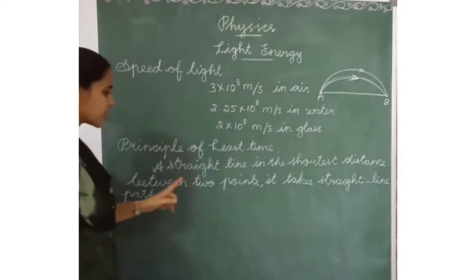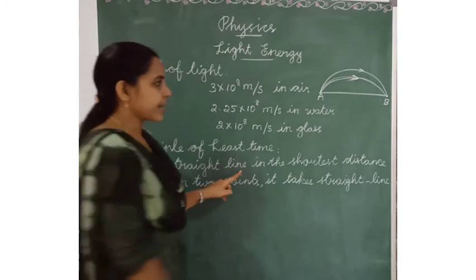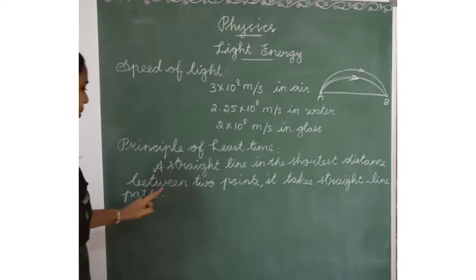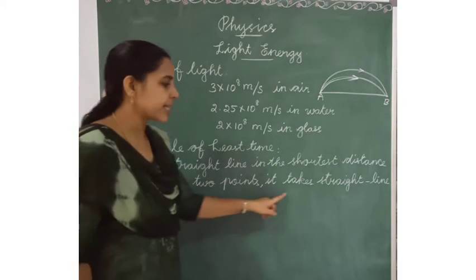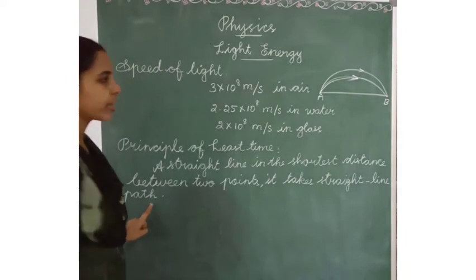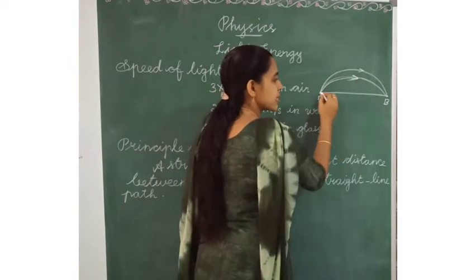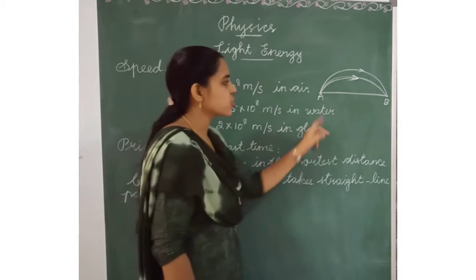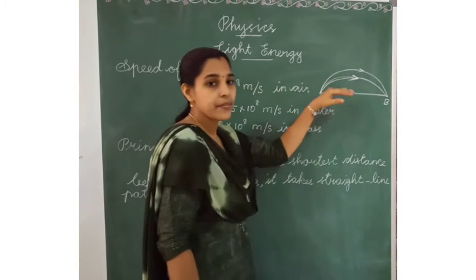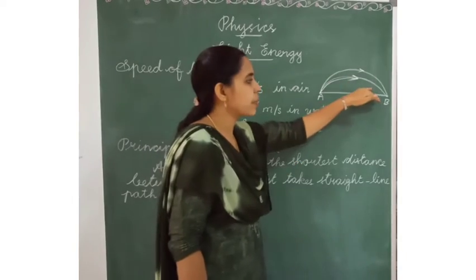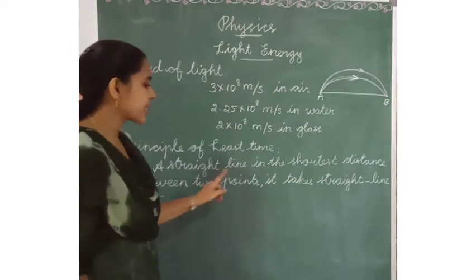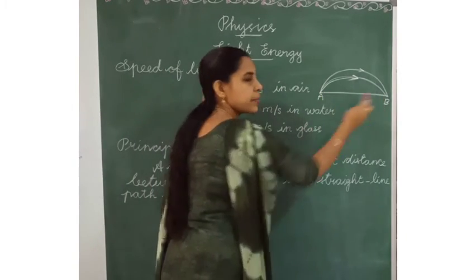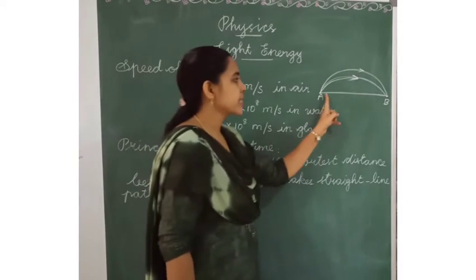A straight line is the shortest distance between two points, so light takes a straight line path. Curved lines make a longer distance while straight lines make a shorter distance. The straight line gives the shortest distance between two points A and B, and light takes that straight line path.